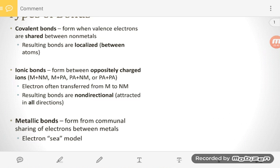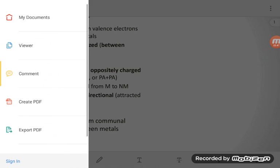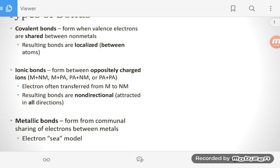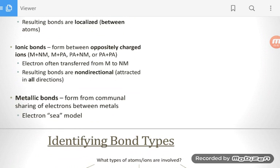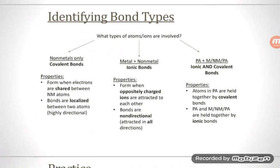So now that we've established our three types of bonds, what we want to do is actually just figure out, if I look at a compound, which bonds does it contain? And so we can look at this very simple type of flow chart, and we can see there's really one main question we need to ask ourselves: What types of atoms or ions are involved in the compound? And there are three basic categories.